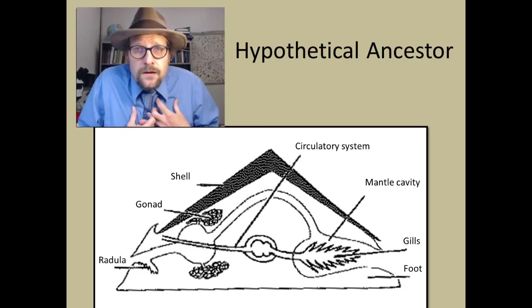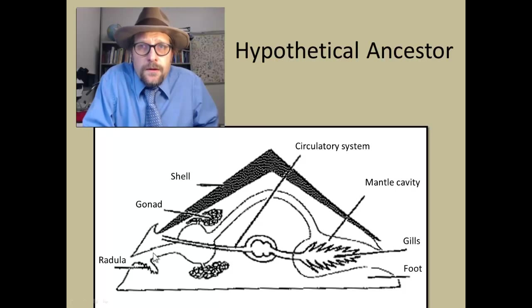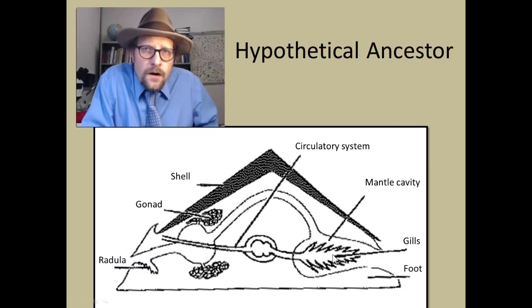It has a gut, with a mouth at one end, and an anus on the other end. It poops into this chamber, called the mantle cavity, and it also contains a gill. Gills are found in all molluscs, except for land snails, which develop lungs.